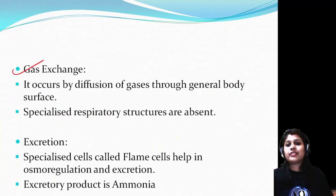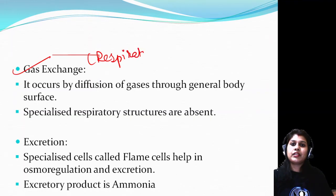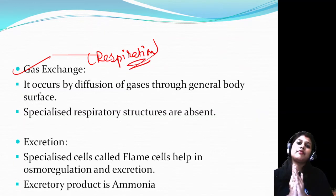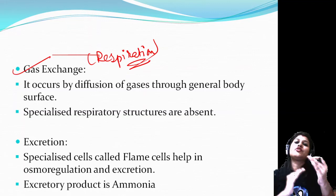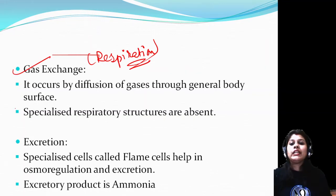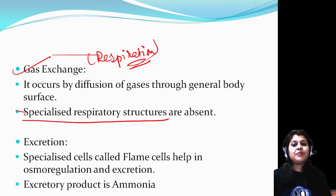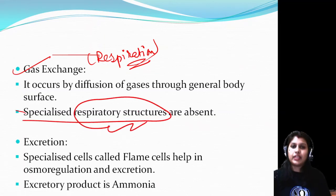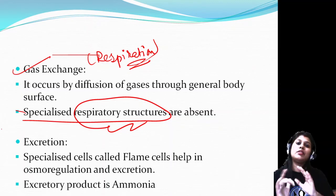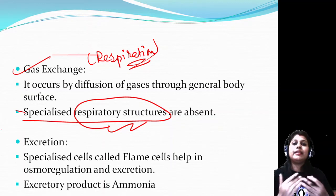Gas exchange - respiration: there is no change from cnidarians. Diffusion of gases happens through the general body surface. Respiration takes place through the body surface. That means they have no specialized respiratory structures. Respiration occurs through the body surface - you have to remember this and compare with the previous phylum.